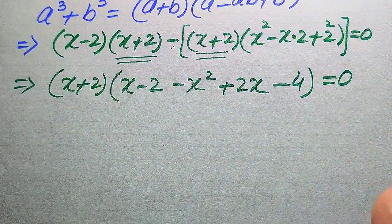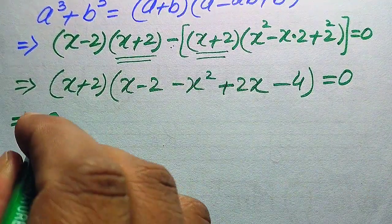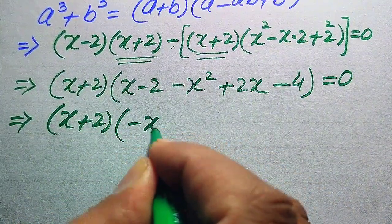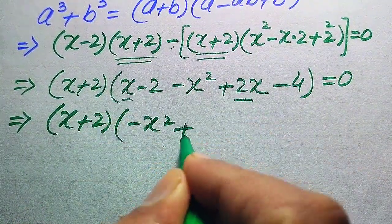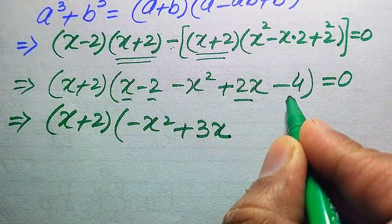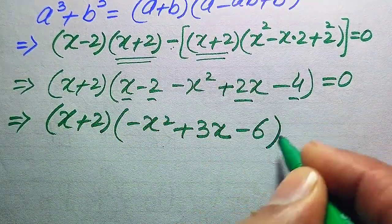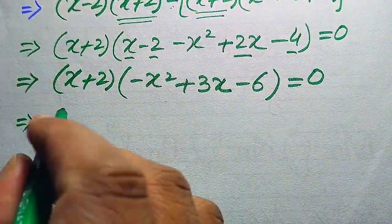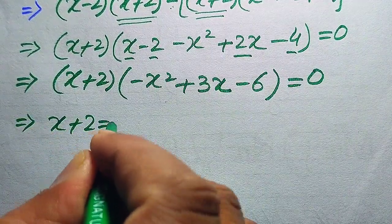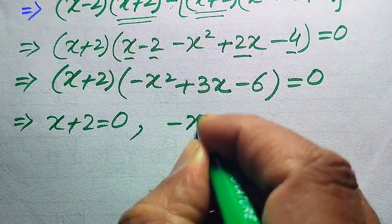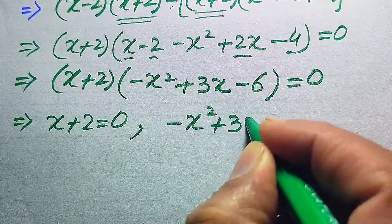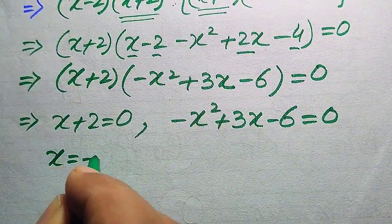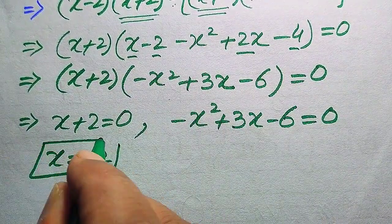After further simplification we have (X plus 2) times (X minus 2 minus X squared plus 2X minus 4) equals 0, which simplifies to (X plus 2)(minus X squared plus 3X minus 6) equals 0. We split into two cases. Case 1: X plus 2 equals 0, giving the first root X equals minus 2.